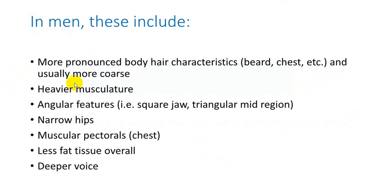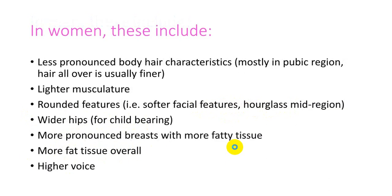In males, there are pronounced body hair changes in the form of beard, mustache, and hair on the chest, usually coarser. Muscles become bulkier with heavier musculature, angular features like a square jaw, triangular mid-region, narrow hips, pectoralis development, less fat tissue overall, and deepening of the voice. In females: lighter musculature, pronounced body hair mainly in the pubic region, finer hair overall, round and softer facial features, hourglass mid-region, wider hips, pronounced breast tissue development, more fat tissue overall, and a higher voice.